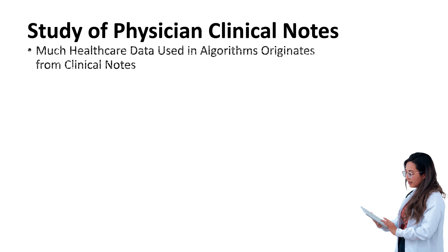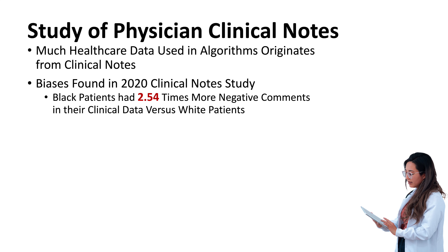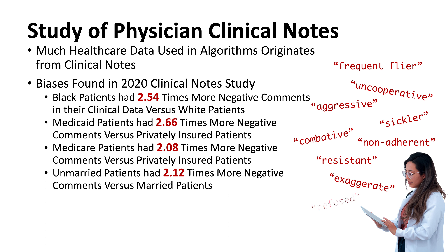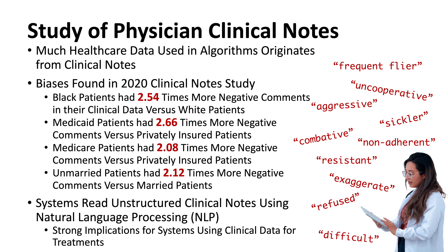Data also comes from physician notes, and studies show the use of negative words in notes for non-white patients is significantly higher than for white patients. Biases were also found against those who use Medicaid and Medicare versus private insurance by a large factor. And as it turns out, unmarried patients had more negative comments than married patients. It's really hard to pinpoint what biases will be, but you can see that on almost any topic there will be a bias potential, and we have to be on the lookout for it.